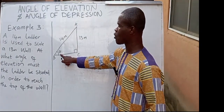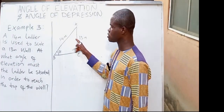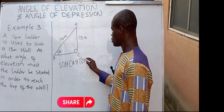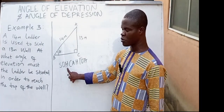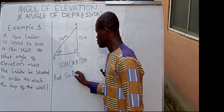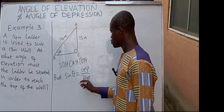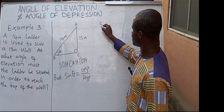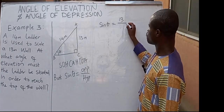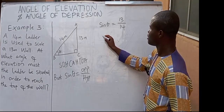We are told the ladder is 14 meters and it scales a wall of 13 meters. This is the required angle. The line facing the required angle is our opposite, and this is our hypotenuse. Opposite and hypotenuse — that relationship is our sine. So we will be using sine theta. Sine theta equals opposite over hypotenuse. Therefore, sine theta equals 13 over 14.